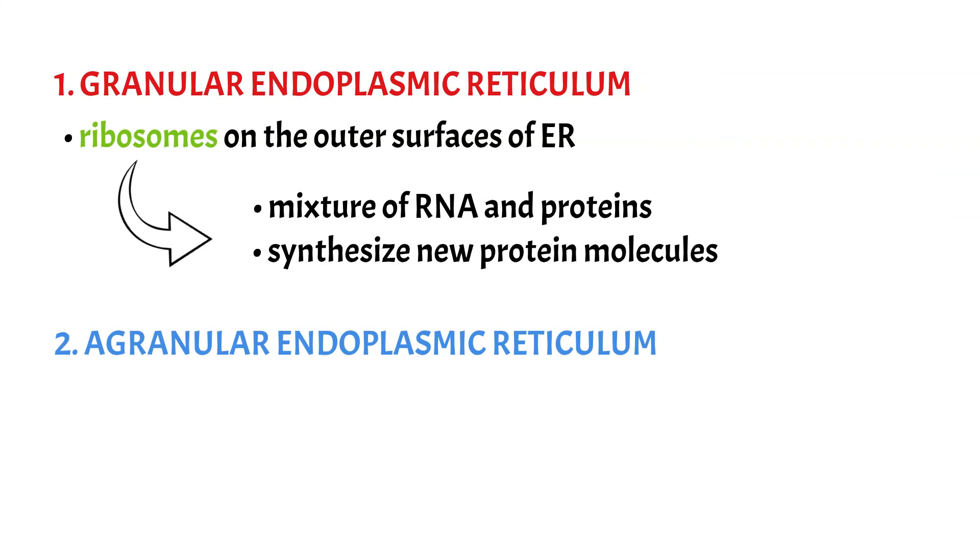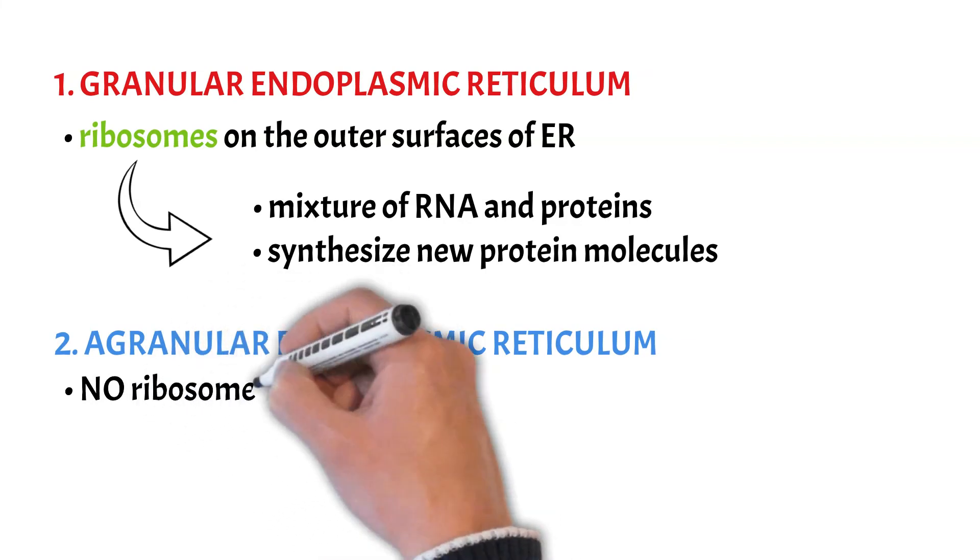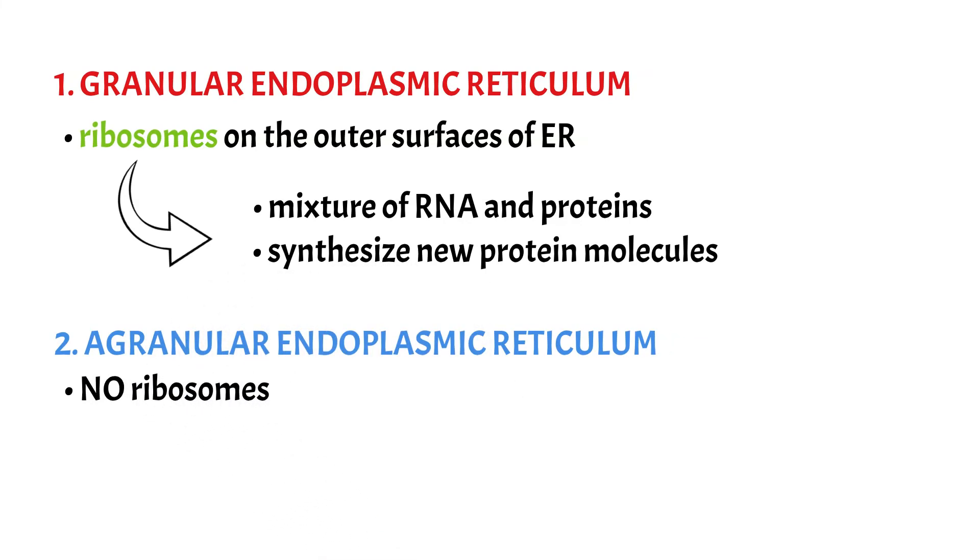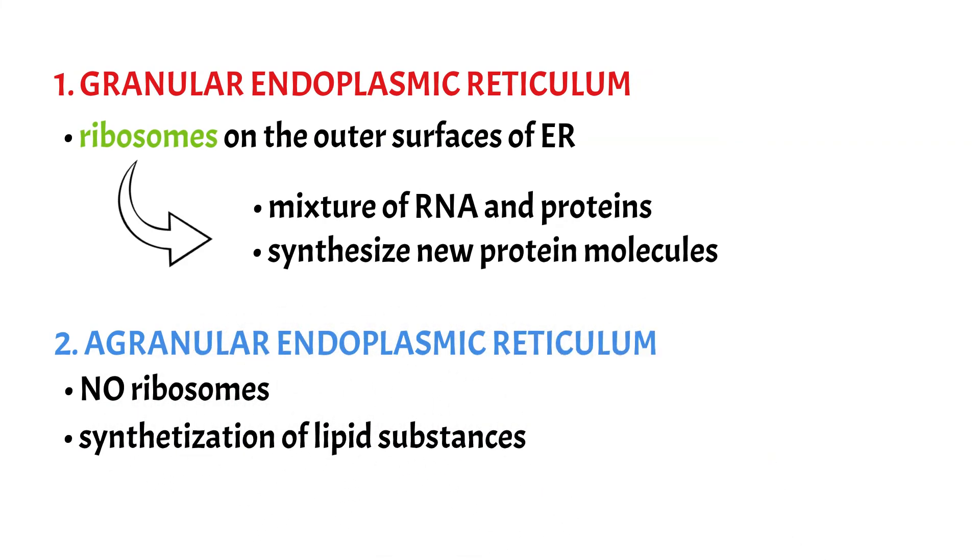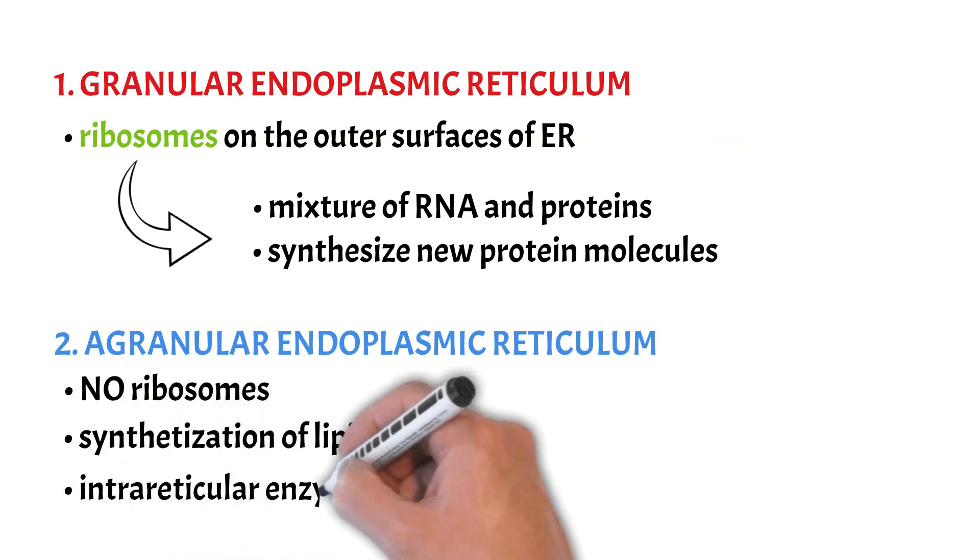The agranular endoplasmic reticulum has no attached ribosomes. Because it has no granules, it's called agranular - A indicates negative in Latin. And it is used for the synthesis of lipid substances and for different processes of the cell that need intrareticular enzymes.